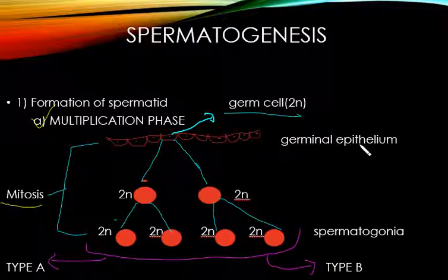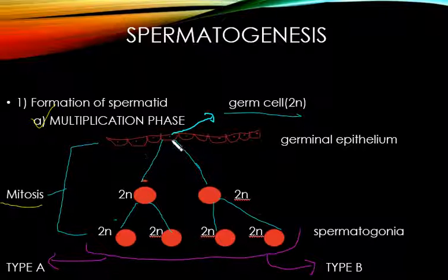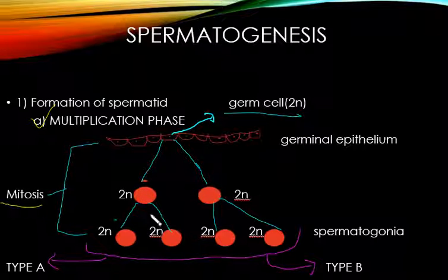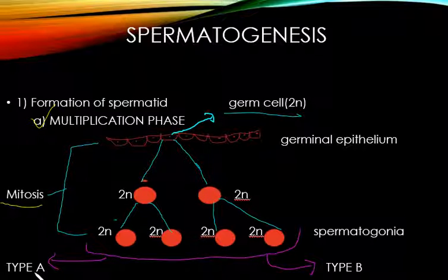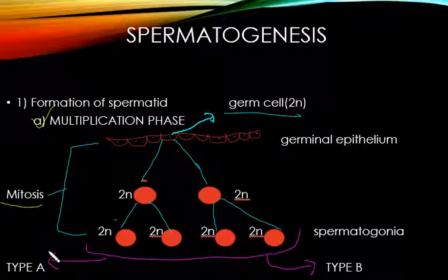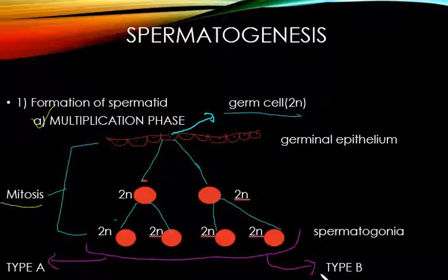Ek baar mitosis hogi toh 2 daughter cells produce hongi, dono diploid hi hongi — kyunki mitosis equational division hai. Phir se yeh mitotically divide hongi, aur phir se dono diploid hi rahenge. Ab yeh jo saare produce hue hain, inhe hum kehte hain spermatogonia. Ab yeh jo spermatogonia produce honge, inke paas 2 pathways honge: ek ko hum kehenge Type A spermatogonia, doosre ko Type B spermatogonia. Type A spermatogonia mein woh spermatogonias aayenge jo stem cells ki tarah act karengi — yani phir se mitotically divide karengi aur more spermatogonia produce karengi. Doosri category Type B spermatogonia mein woh spermatogonias hain jo next phase mein enter karengi.